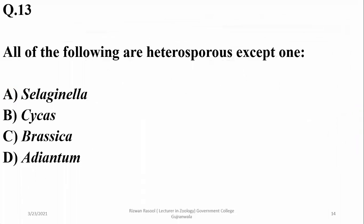All of the following are heterosporous except one: Selaginella, Cycas, and Brassica are heterosporous, but Adiantum is homosporous. We have to find the homosporous plant in this list.